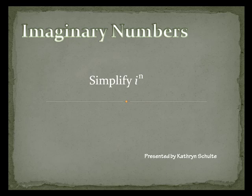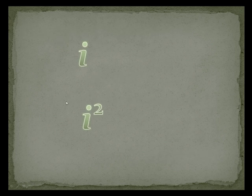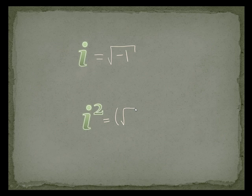Imaginary Numbers. Simplify i to the n. First we need to review: i is the square root of negative 1. i squared is the square root of negative 1, squared, and that turns out to be negative 1.